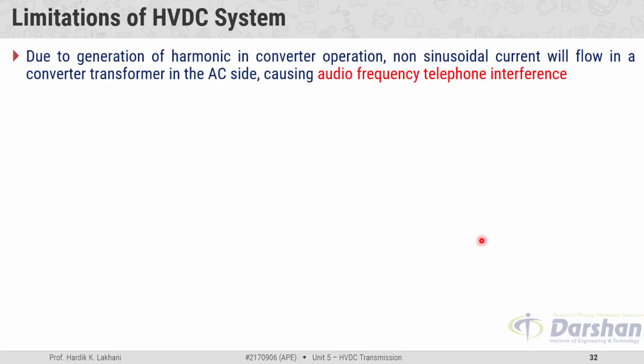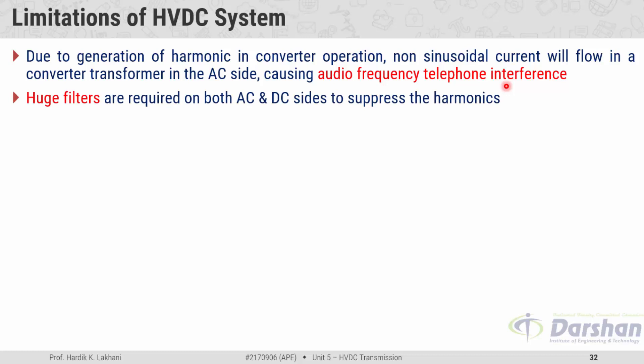Limitations of HVDC systems: Due to generation of harmonics in converter operation at the sending-end rectifier and receiving-end inverter, non-sinusoidal current flows in the converter transformer on the AC side, causing audio frequency telephone interference. Filters are required on both AC and DC sides to suppress harmonics — AC filters are connected to the AC bus and DC filters are placed after the smoothing reactor to eliminate higher order harmonics.